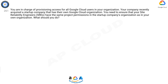Question 261: You are in charge of provisioning access for all Google Cloud users in your organization. Your company recently acquired a startup company that has their own Google Cloud organization. You need to ensure that your Site Reliability Engineers (SREs) have the same project permissions in the startup company's organization as in your own organization. What should you do?